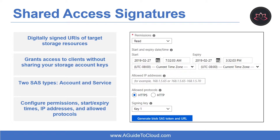As a best practice, you shouldn't share storage account keys with external third-party applications. If these apps need access to your data, you will need to secure their connections without using storage account keys. For untrusted clients, use a shared access signature — a string that contains a security token that can be attached to a URI.